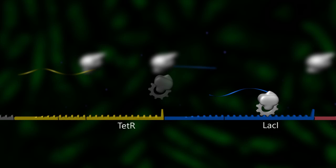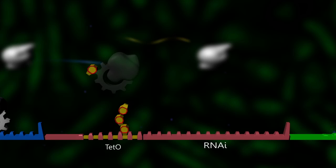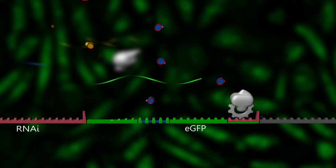Much like LACI, it encodes repressor proteins that are targeted to a region upstream of the RNAi gene. They prevent the transcription of shRNA, and the result is increased GFP expression.